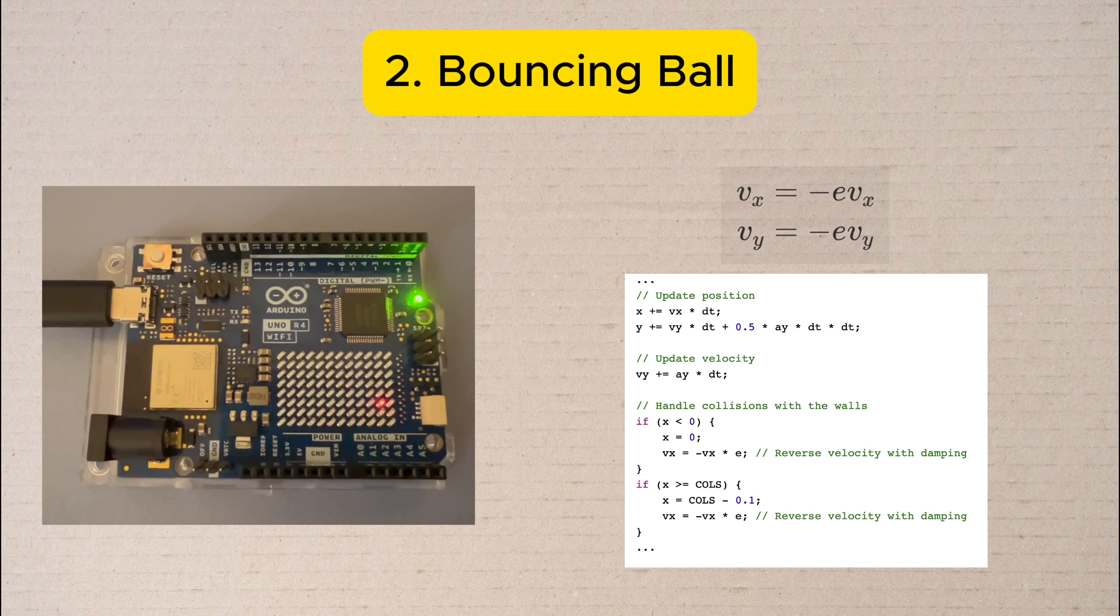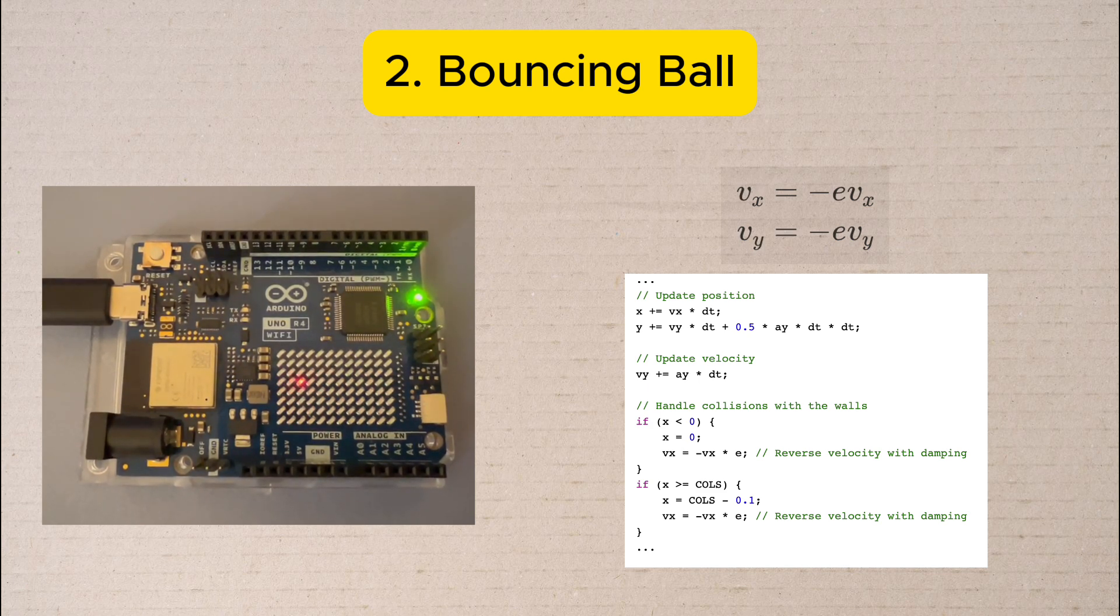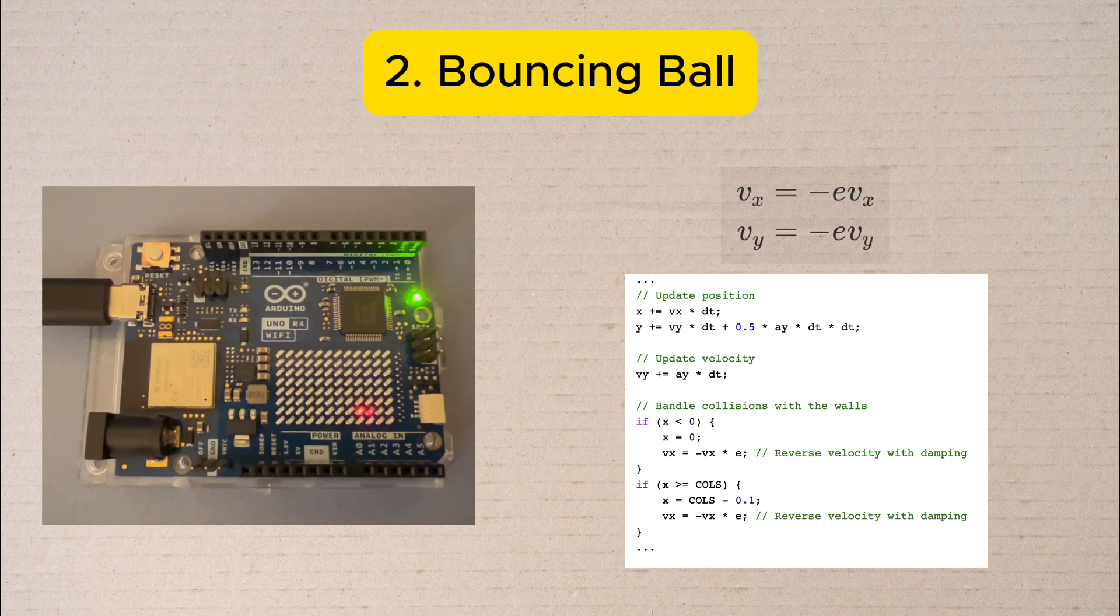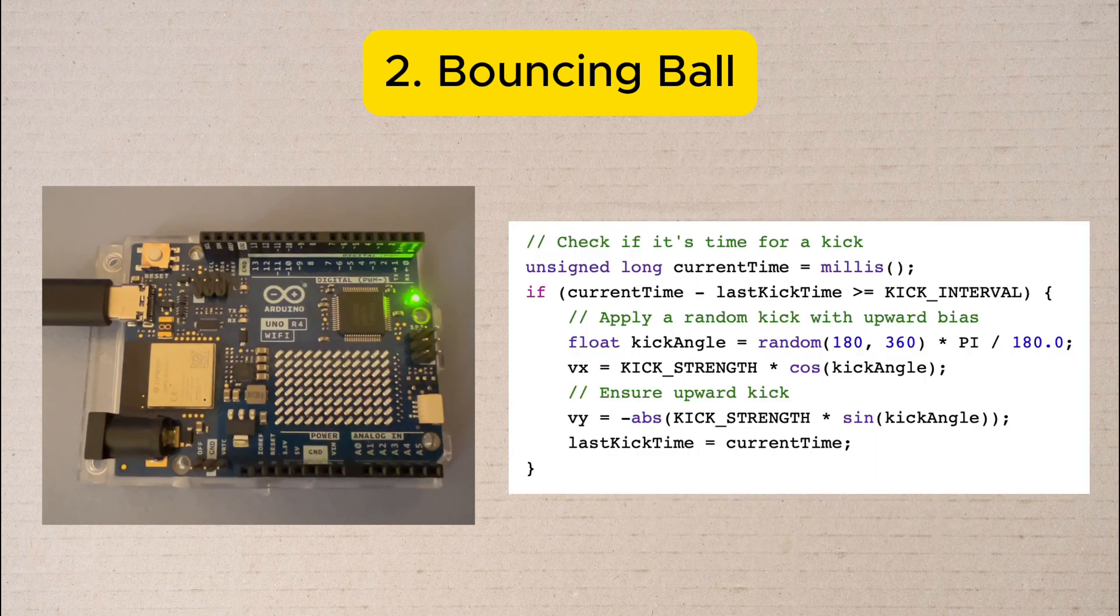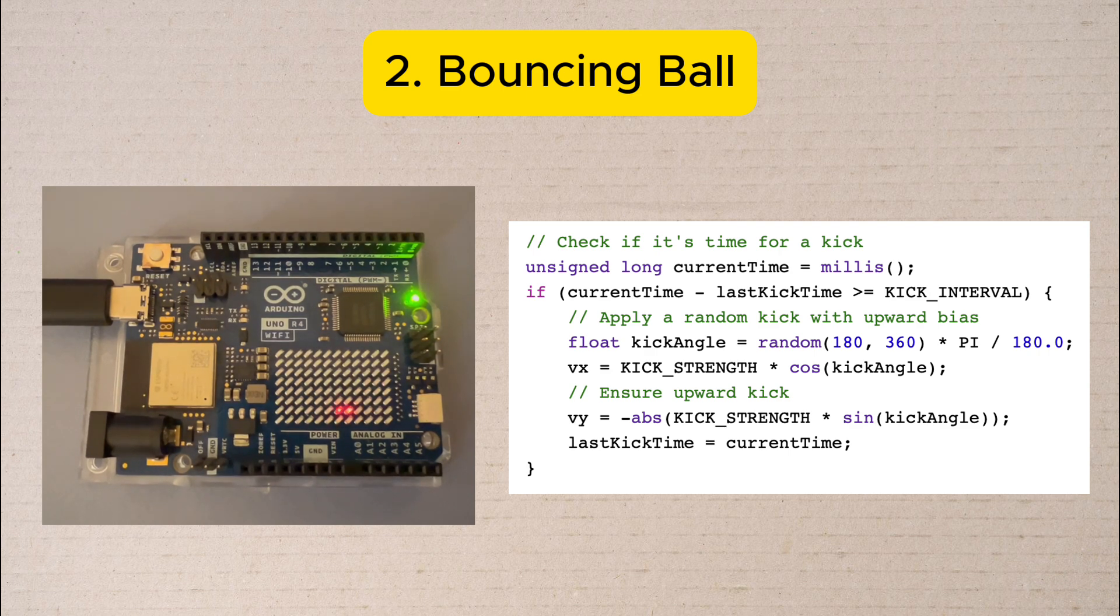When a collision occurs we reverse the velocity component and simulate a slight loss of energy. To keep the ball moving we implement a kick system that activates every five seconds. For natural looking motion we track the ball's position using floating point numbers but round to the nearest integer.